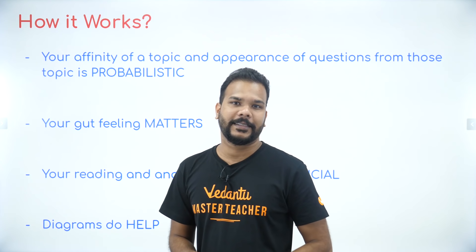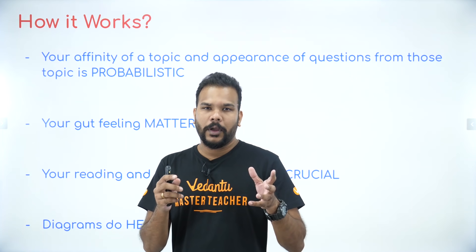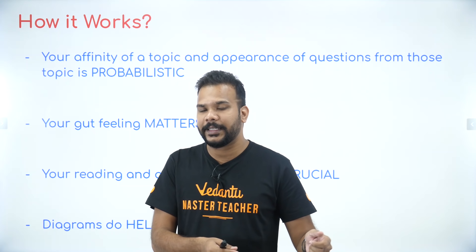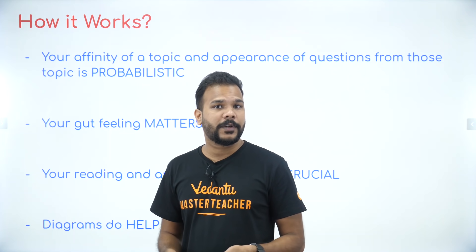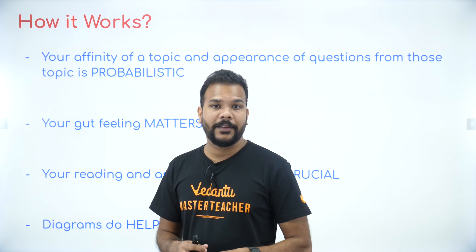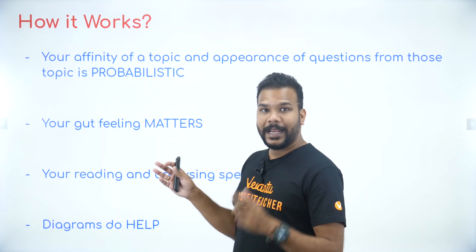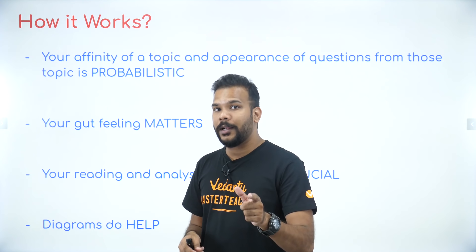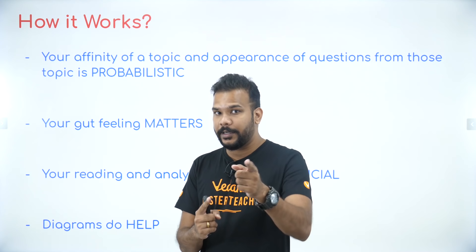In the first go, when you are reading — say there are 25 questions this year, earlier till 2019 there were 30 — going through 30 questions in 10 minutes is a very fast process. So your gut feeling about a question when you look at it will help you decide whether it is easy, mediocre, or difficult.